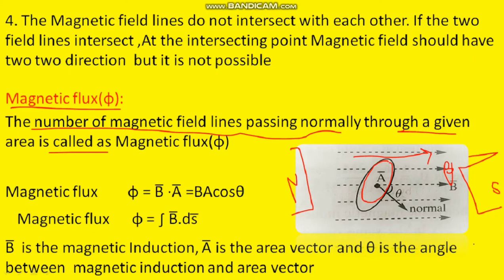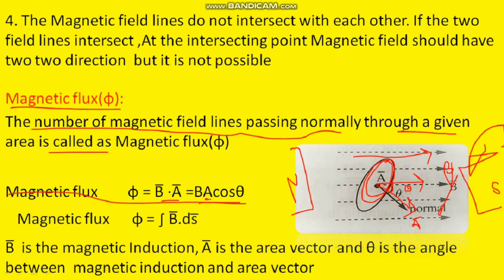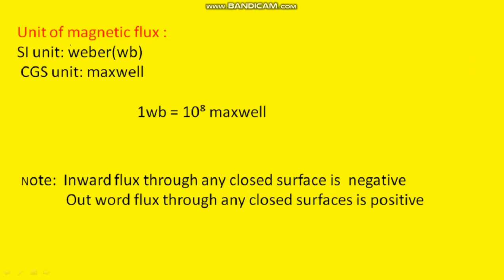To calculate magnetic flux, we take a closed area. The area vector is perpendicular to the surface — that is the direction of the area vector along the normal. The angle theta is the angle between the magnetic field B and the area vector A. Using the formula: flux = B dot A = B A cos theta, where B is the magnetic field, A is the area, and theta is the angle between B and A. This can also be written in integration format as the integral of B dot dS.